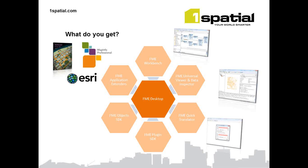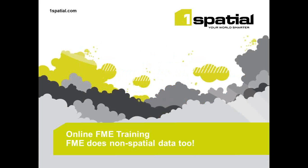FME stands for Feature Manipulation Engine and in a nutshell it's a tool for data interoperability — allowing us to move data between different data stores and different formats, and transform that data along the way. We generally think of it as a central engine linking to multiple data formats, so we can move data from one format to another, say from CSV files to Oracle tables, and FME understands the limitations and possibilities of each format. FME Desktop has a number of components. The ones we're interested in today are the FME Viewer and mostly FME Workbench, which is the workhorse of the desktop application where we build our processes and transform our data.